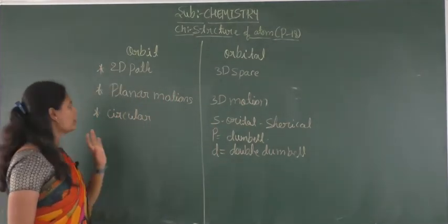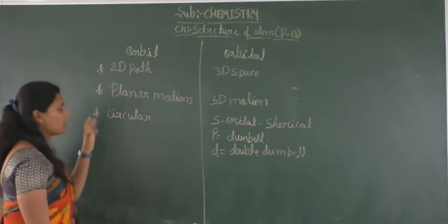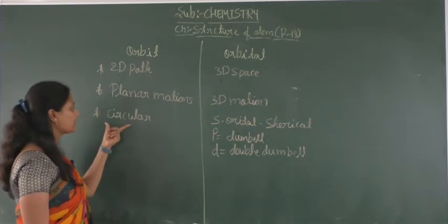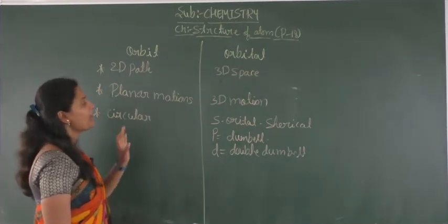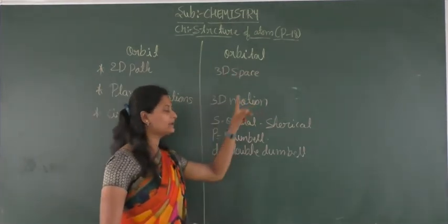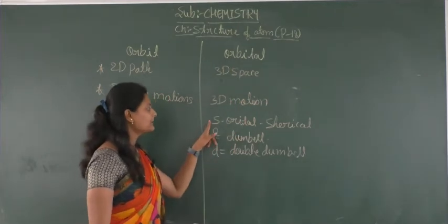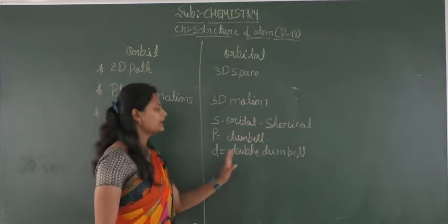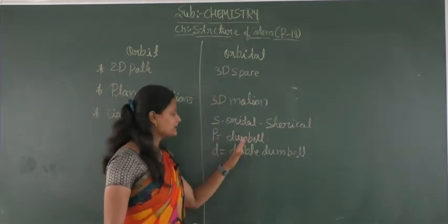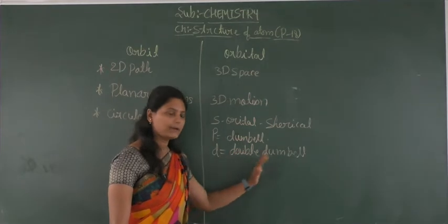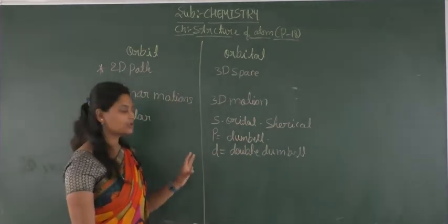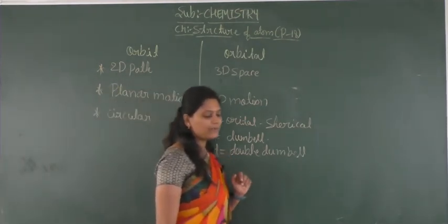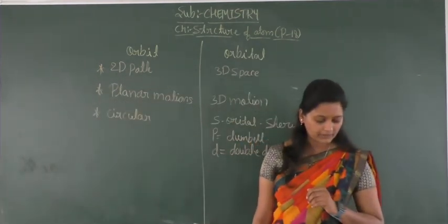All orbits have the same circular shape. But when we consider the orbitals: S orbital is spherical, P orbital is dumbbell, D orbital is double dumbbell, and the F orbital has a complex structure. This is about the shape of orbitals.